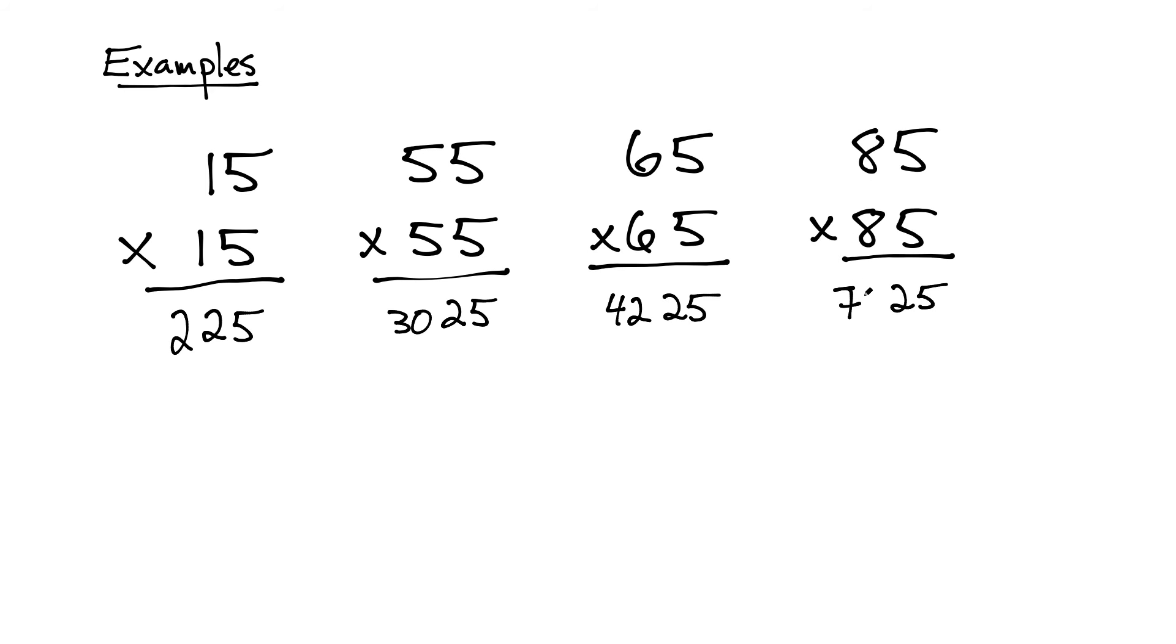And the last one clearly is simply 7225. So there you have it, folks. A nice little trick to square numbers that end with 5.